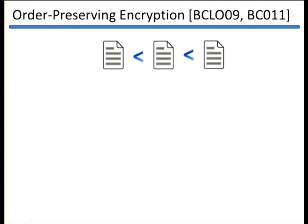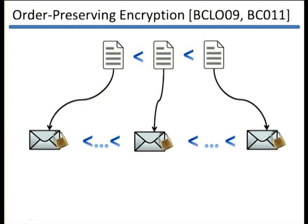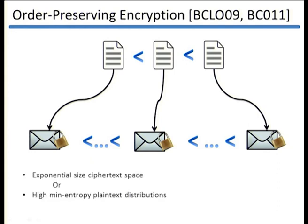However, they showed that in order to get strong security guarantees from such schemes, the ciphertext space has to be very sparse — so sparse that the schemes would be totally impractical. They proved that either we get strong security guarantees like IND-CPA security and the size of the ciphertext space is exponential in the size of the message space, making the scheme impractical, or they assumed that the plaintext distributions have sufficiently high min-entropy.